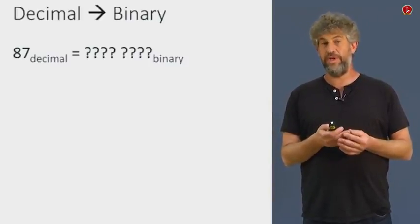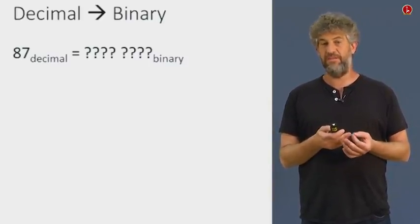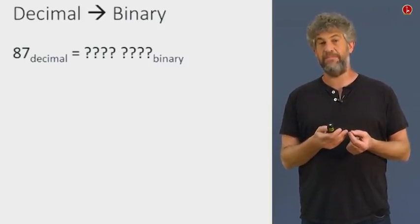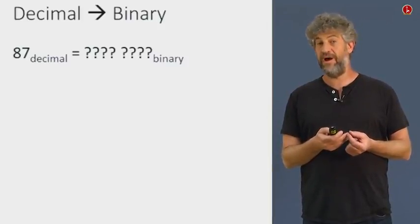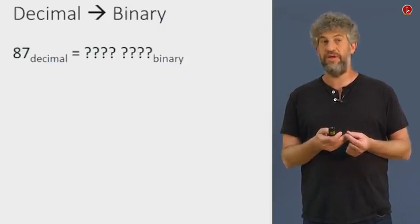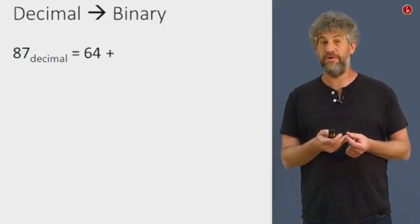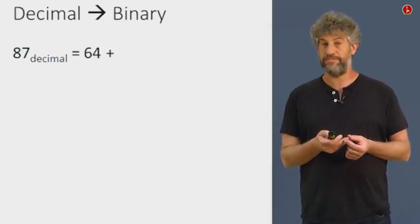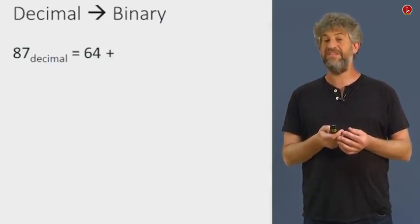Well, remember that the way we get the decimal from the binary is by summing up powers of 2. So we start by figuring out what is the largest power of 2 that fits into our 87 number, and that is going to be 64.